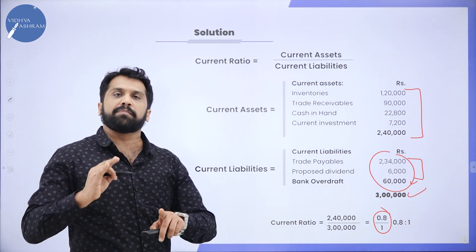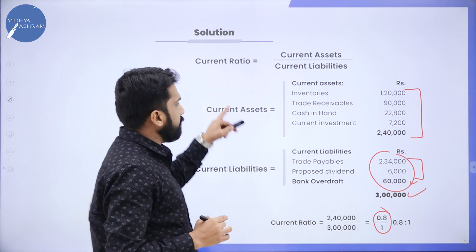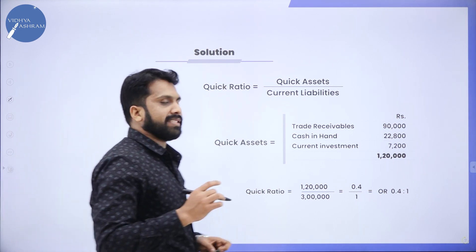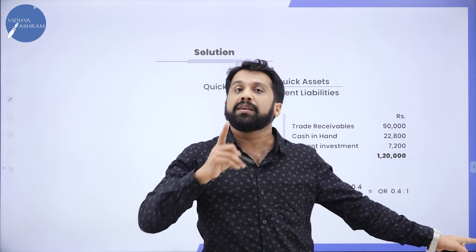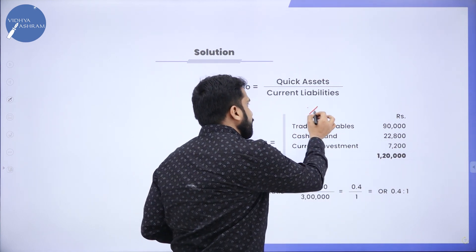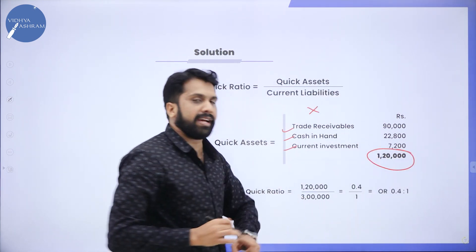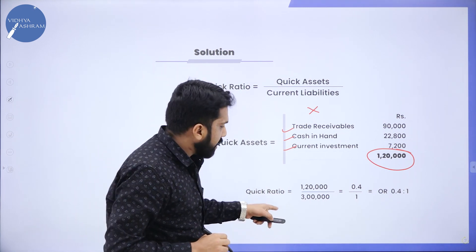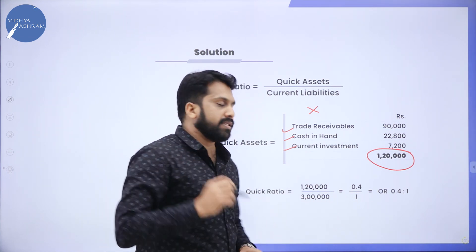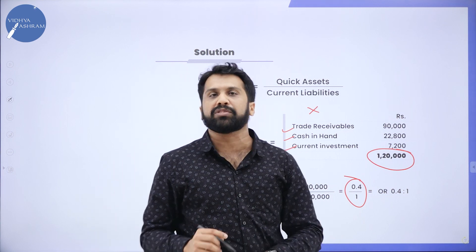Every problem is similar, but you have to be familiar with which are Current Assets and which are Current Liabilities. For Quick Ratio, Quick Asset divided by Current Liability. We remove only Inventory from this problem. The remaining three items total 1,20,000. Current Liability remains the same at 3,00,000. So 1,20,000 divided by 3,00,000 gives 0.4 divided by 1, or 0.4 is to 1.